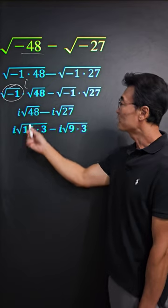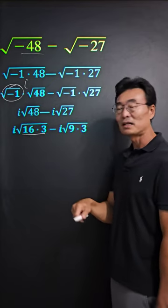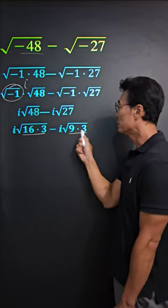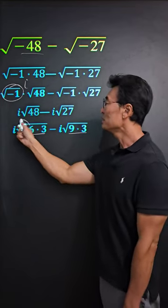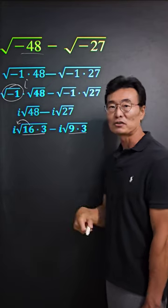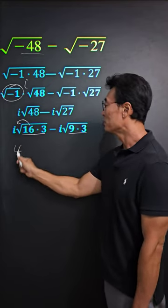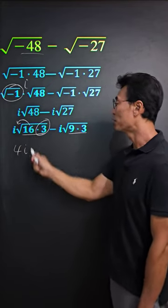Then the 48 could be rewritten as 16 times 3, and the 27 could be rewritten as 9 times 3, where the 16 comes out. Or take the square root of it - we end up getting 4i, and then we have the root 3 remaining.